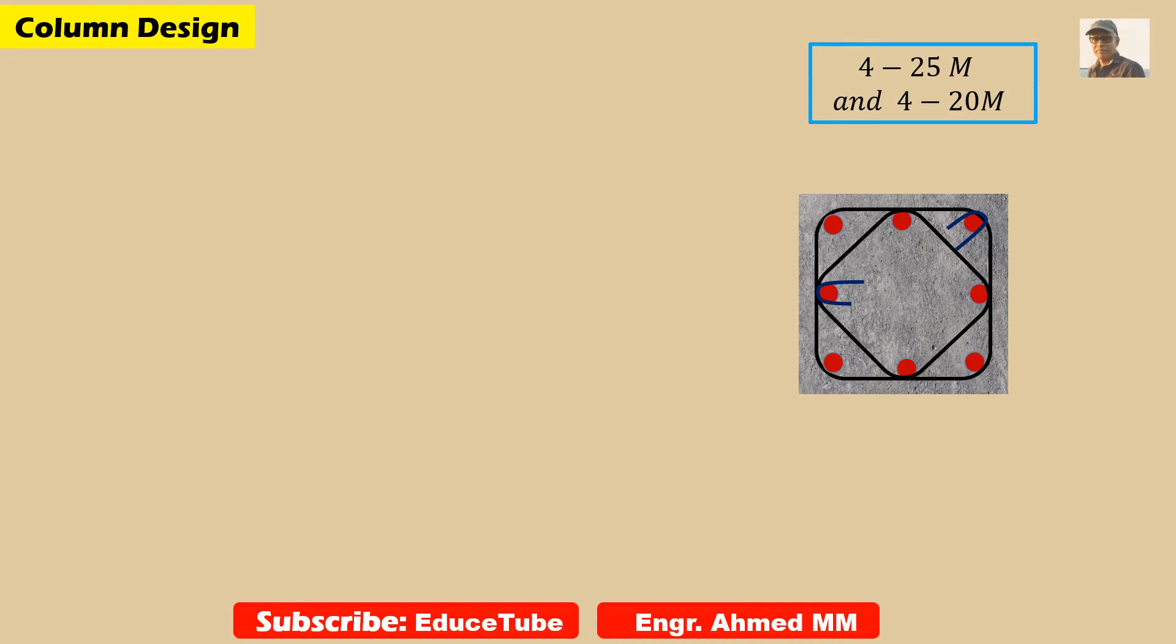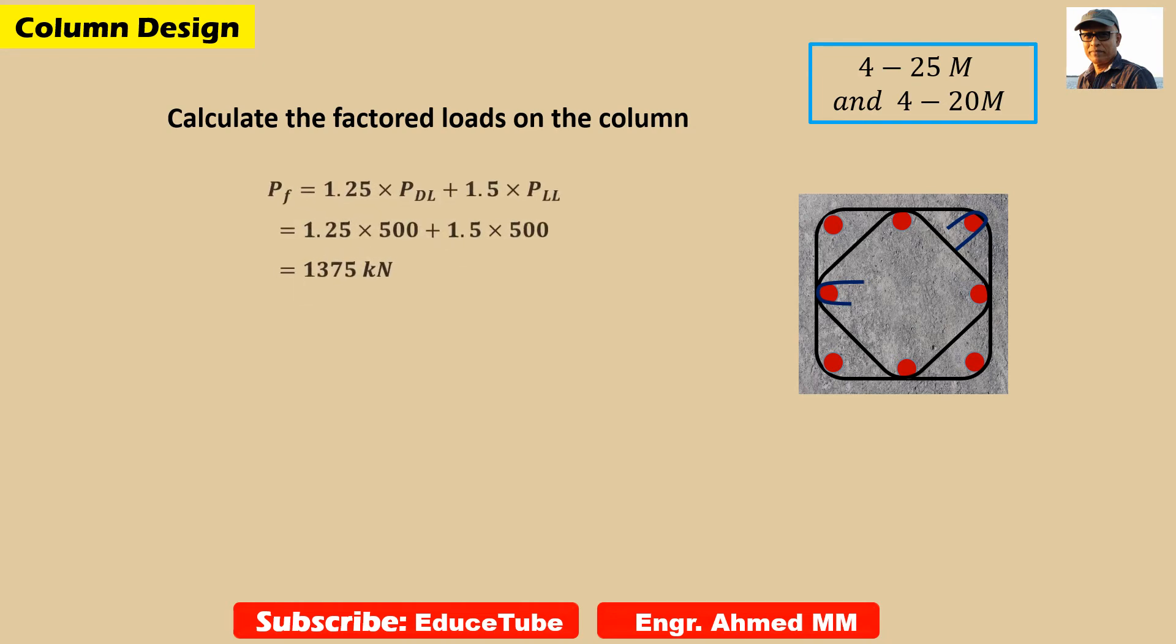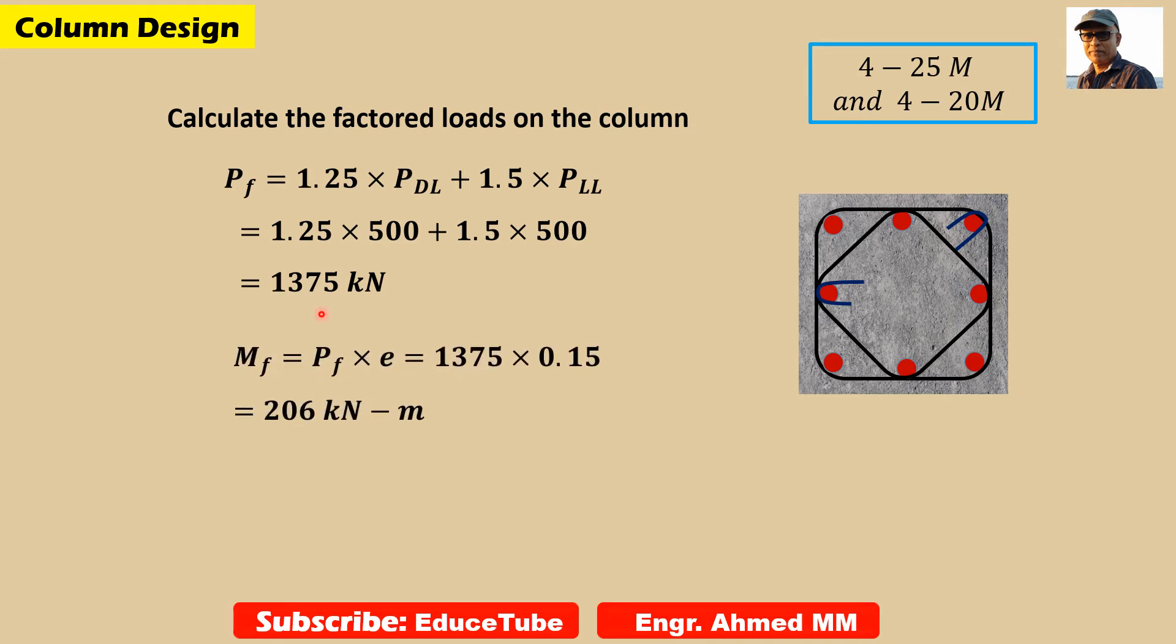Now let's start designing. Calculating the factored load on the column. As I told at the starting, we need to get the factored load on the column. So PF equal to this and MF equal to this. Now our task is to know what are the economic range of reinforcement ratios. It is 1 to 2%. I am assuming 1.8%.